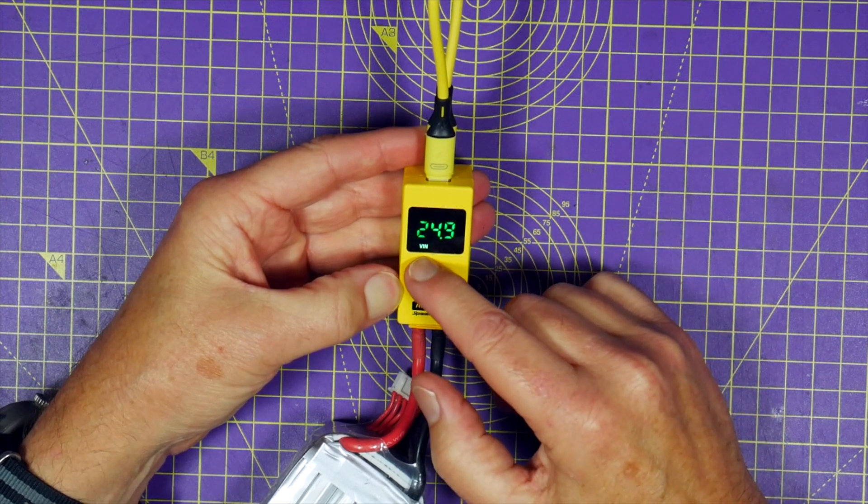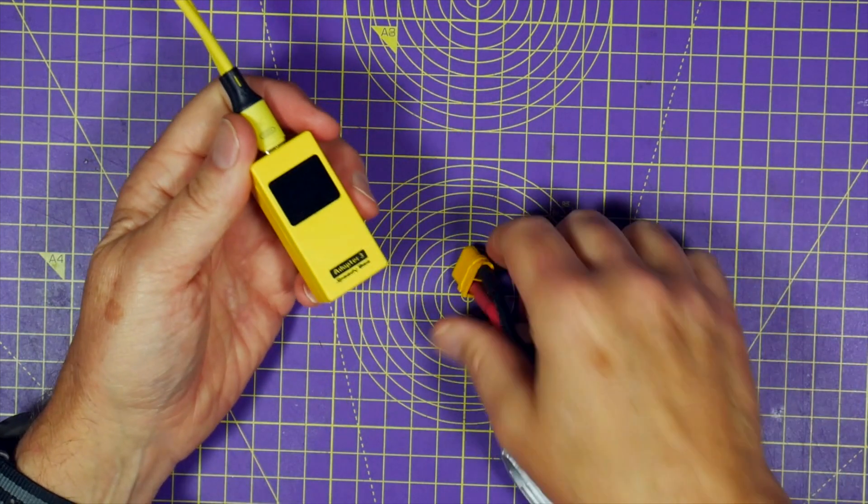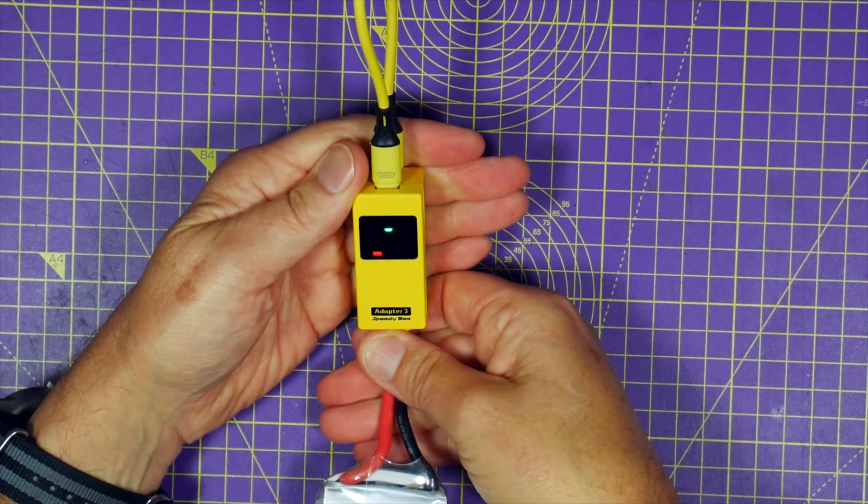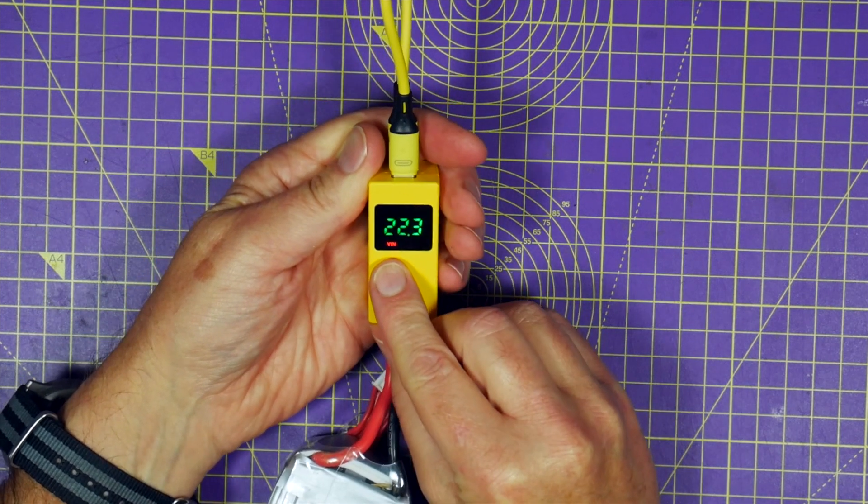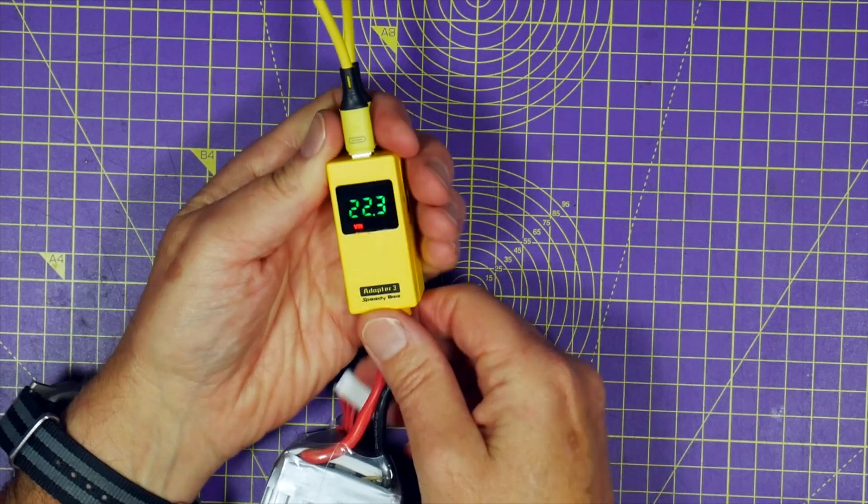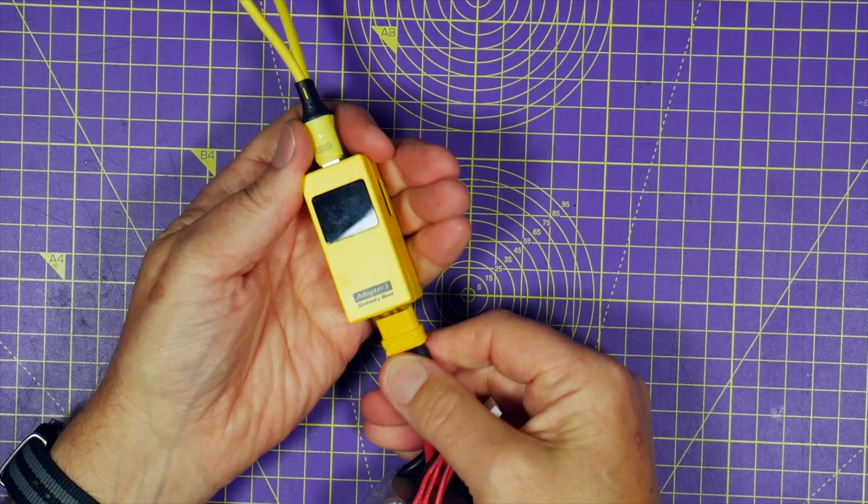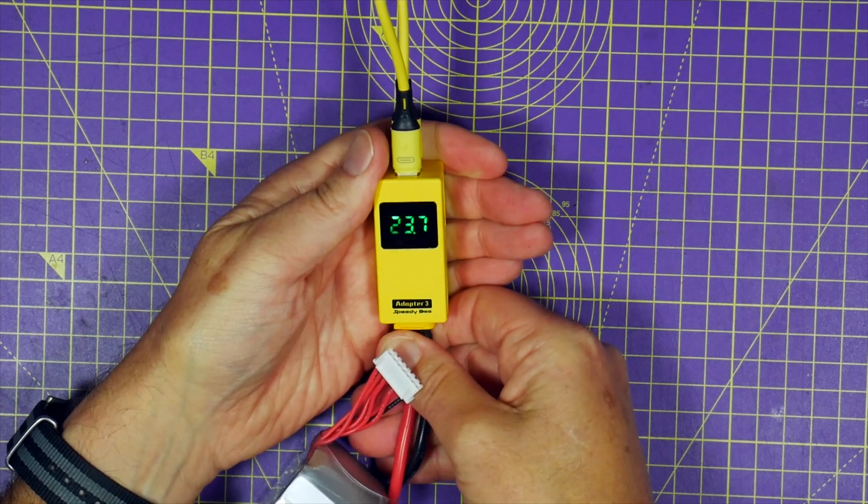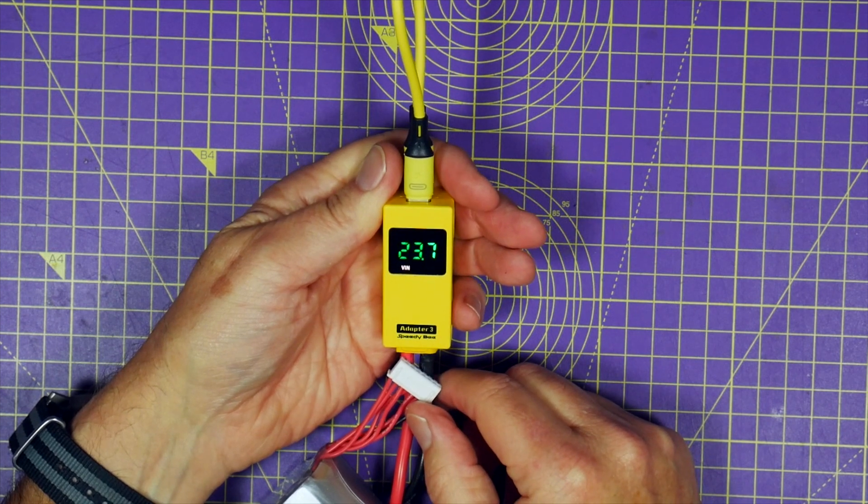So you just plug that guy in, and this is saying this is 25 volts, which is all very nice, and the VIN is green. If we plug in something else, that's 22.3 volts. The VIN is showing up in red. That means it needs a bit of a charge. There is another color on here, it's white, that's sort of middle ground. That's 23.7.